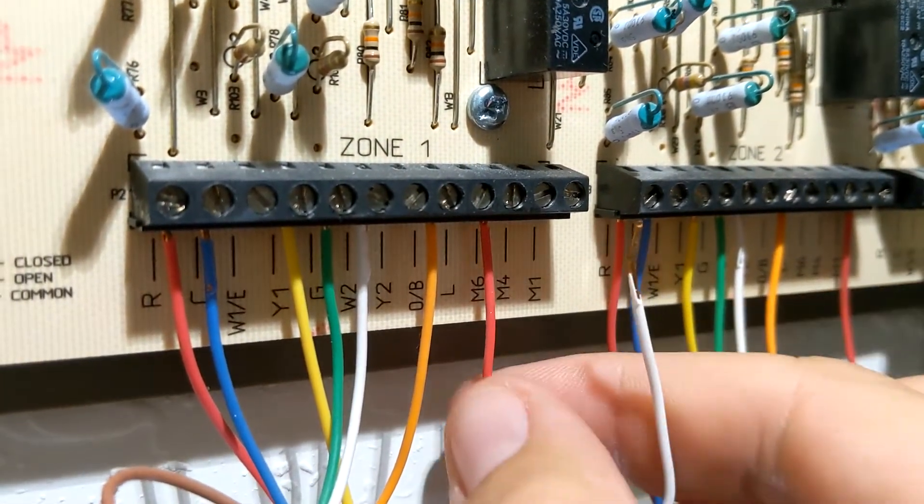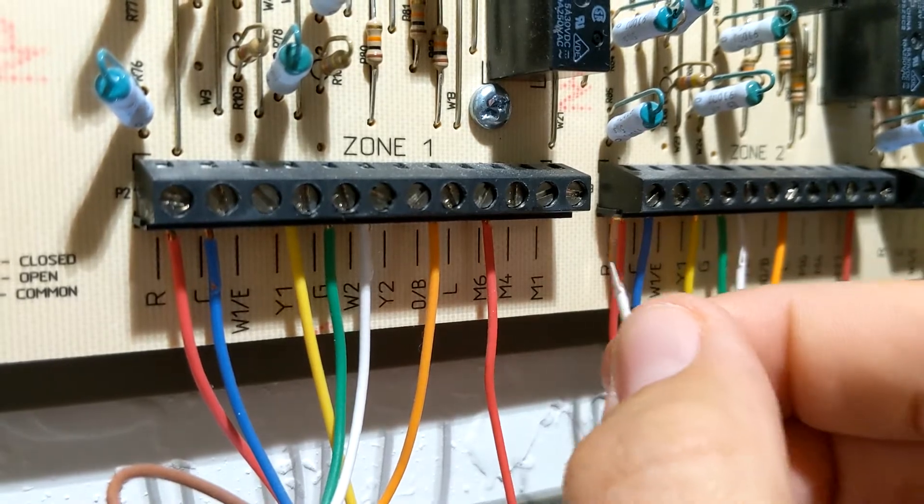The M1 and M6 are the power that is going to the damper. So on the board you can see zone one.